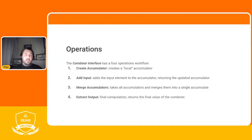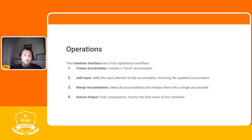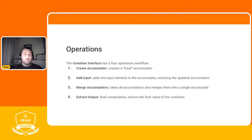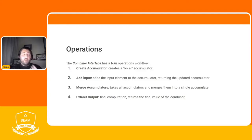The CombineFn interface has four operations. CreateAccumulator creates a local accumulator in every worker. AddInput takes elements one by one and combines each with the worker's accumulator, returning an updated accumulator for the next element. Once all elements are partially aggregated, MergeAccumulators takes all accumulators from the previous step and merges them into one single accumulator.